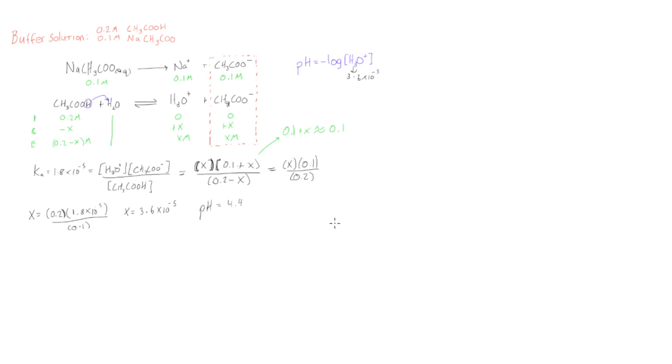Sometimes we want to find the percent ionization of a weak acid or base in a buffer solution. I've put up the work from a previous video that was finding the pH of a buffer solution, but now what we want to do is find the percent ionization of acetic acid, which was our weak acid.